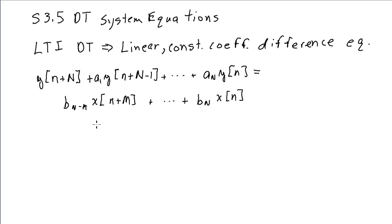Using summation notation, we can write this more concisely as the sum from k equals 0 to N of AK Y of N plus N minus K equals the input terms sum from K equals 0 to capital M. Here we have the B coefficients.